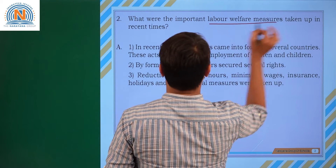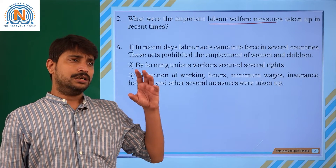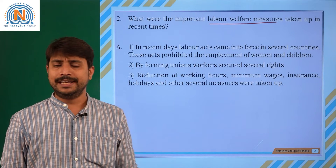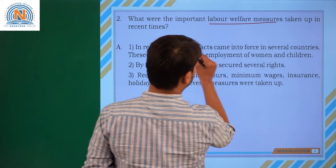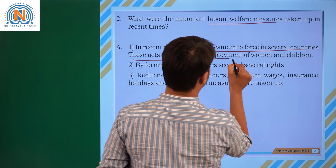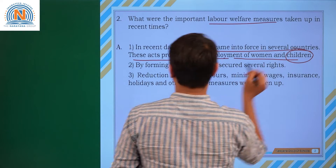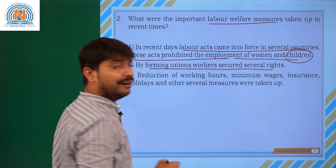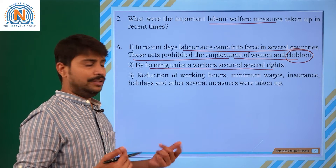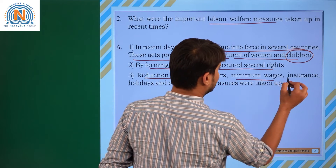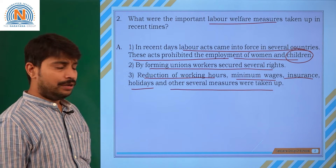What were the important labor welfare methods taken up in recent times? Labor welfare is supposed to address disagreements and degradation faced by laborers so they can raise their voice and be gainful. In recent days, labor acts came into force in several countries. These acts prohibited the employment of women and children. By forming unions, workers secured several rights like equal wages, week off, limited working hours, reduction of working hours, minimum wages, insurance, holidays, and other several measures.